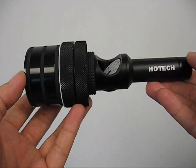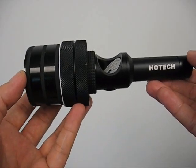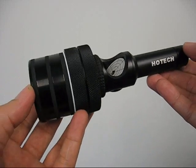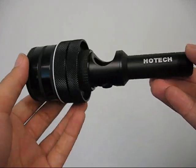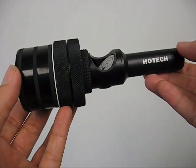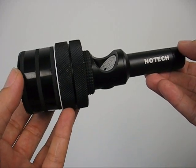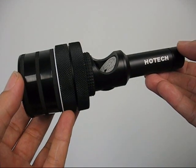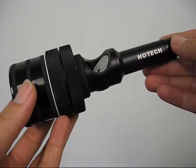This video shows you how to collimate the 2-inch HOTech SCA laser collimator on a Newtonian telescope. In the following procedures, the collimator will help you to collimate the secondary and the primary mirrors on your telescope.